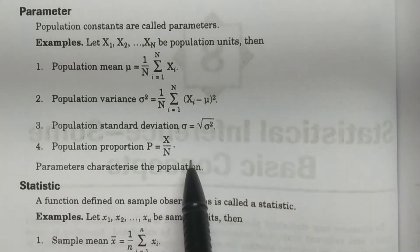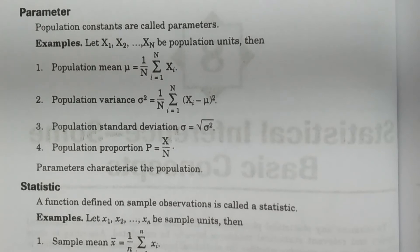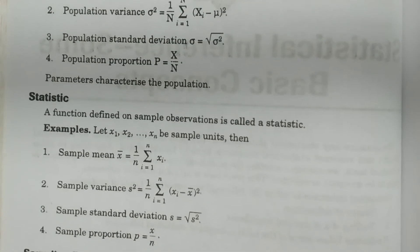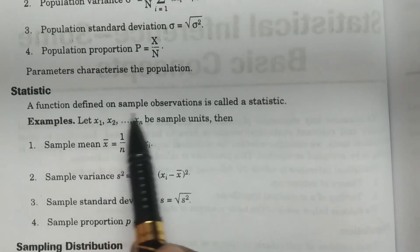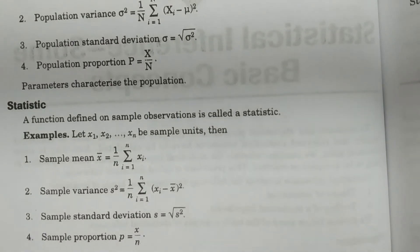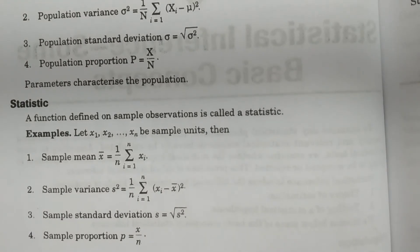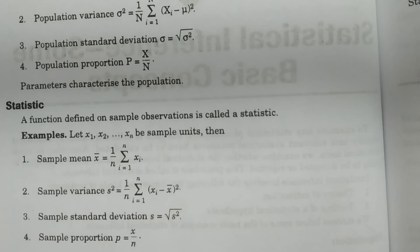The parameters give the idea about the population — that is very important. Now, coming to the definition of statistic: a function defined on sample observations is called statistic. Sample observations means the units in the sample, which are a finite number of units taken from the population — those are called sample observations.